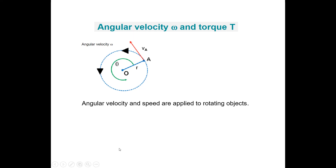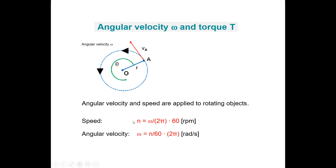Angular velocity is always applied to rotating objects. We also use the term speed in rotating objects, and speed is in rpm. We can calculate speed out of angular velocity: when we divide the angular velocity by 2π, we get the number of rotations per second. When we multiply that by 60, we get the number of rotations per minute. Conversely, when we have speed in rpm, we can calculate angular velocity by dividing n by 60 to get rotations per second, then multiplying by 2π to get radians per second — so omega.